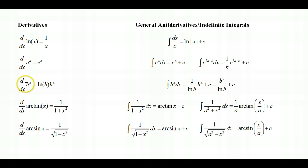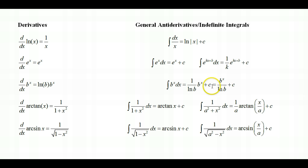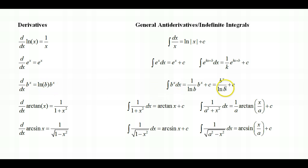This one's new. We know the derivative of b to the x equals the natural log of b times b to the x. Now we can integrate a general exponential function: the integral of b to the x dx equals 1 divided by the natural log of b, times b to the x, plus c. Or equivalently, b to the x divided by the natural log of b plus c. So when I take the derivative it's natural log of b times b to the x; when I take the integral it's b to the x divided by the natural log of b.